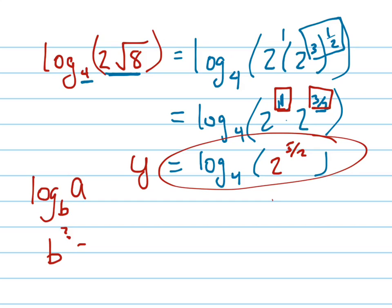I would suggest that you set this whole thing equal to Y, and now solve for Y using your equivalence. Or better yet, let's use X. Since we don't have an X in here, X is usually what people like. 4 to the X equals 2 to the 5 halves.